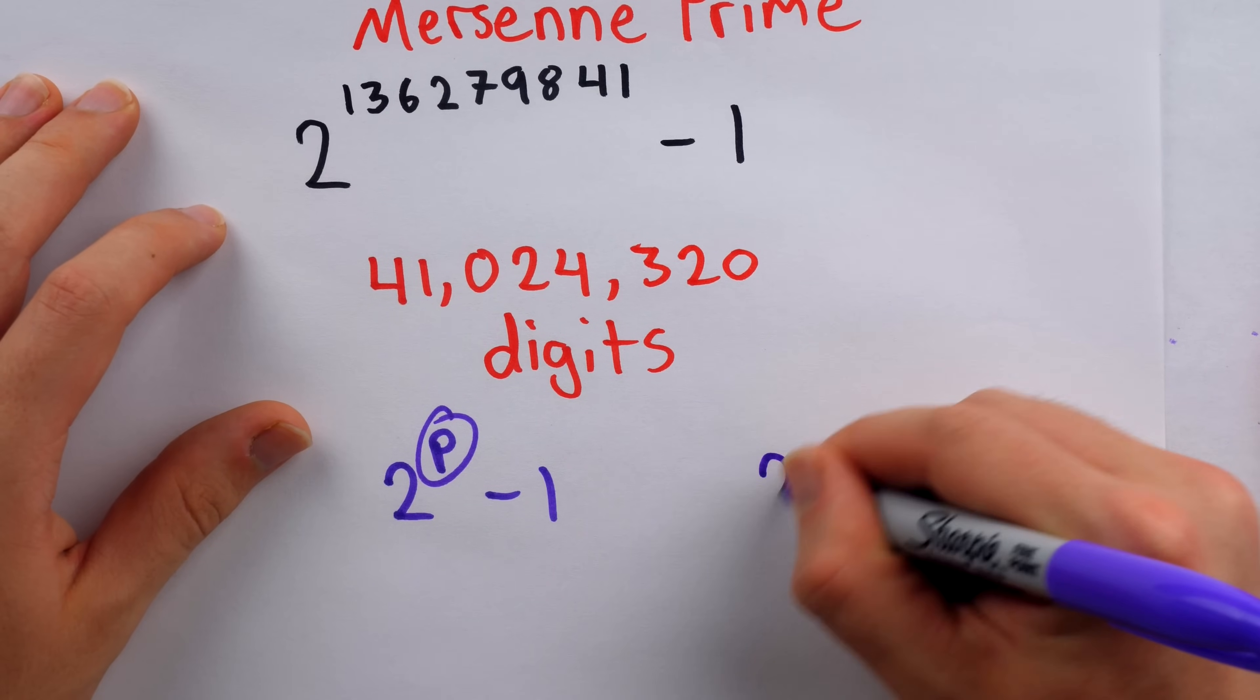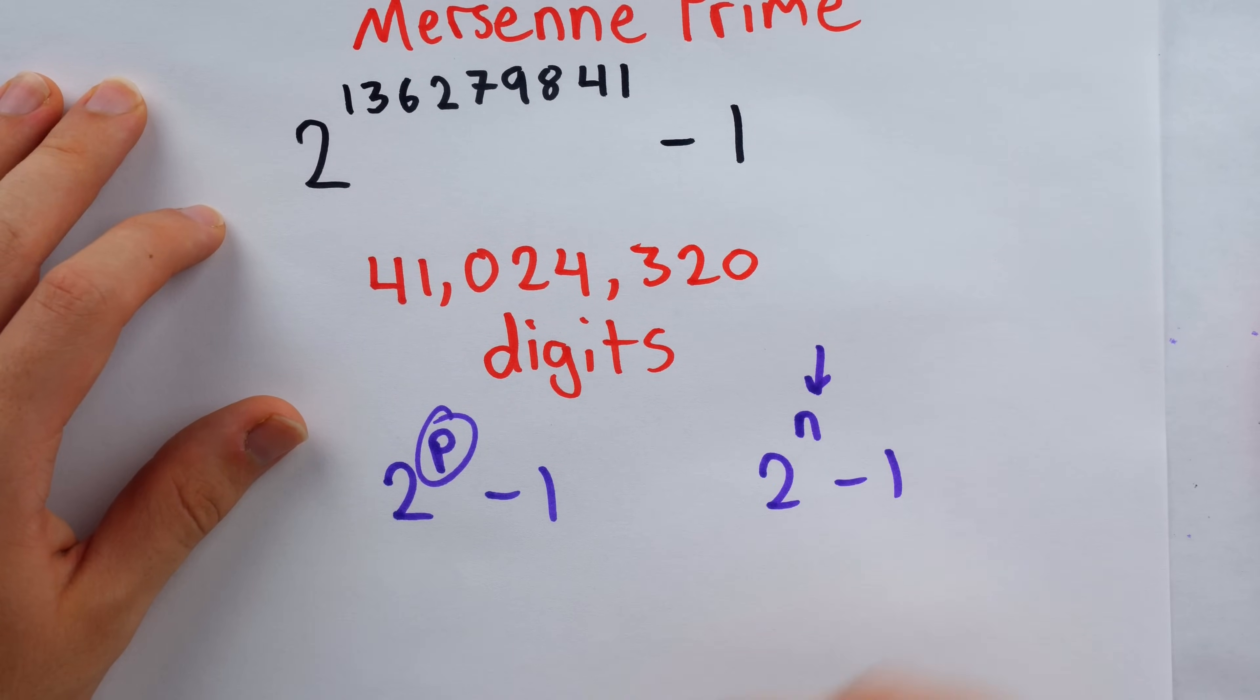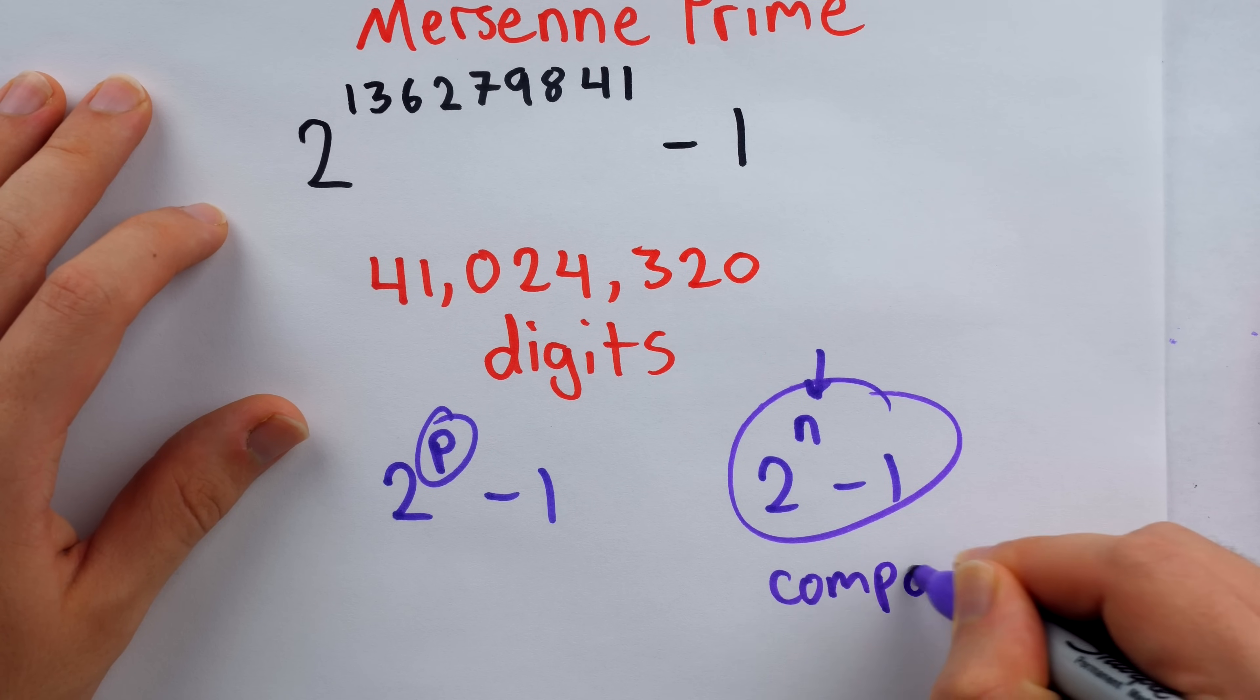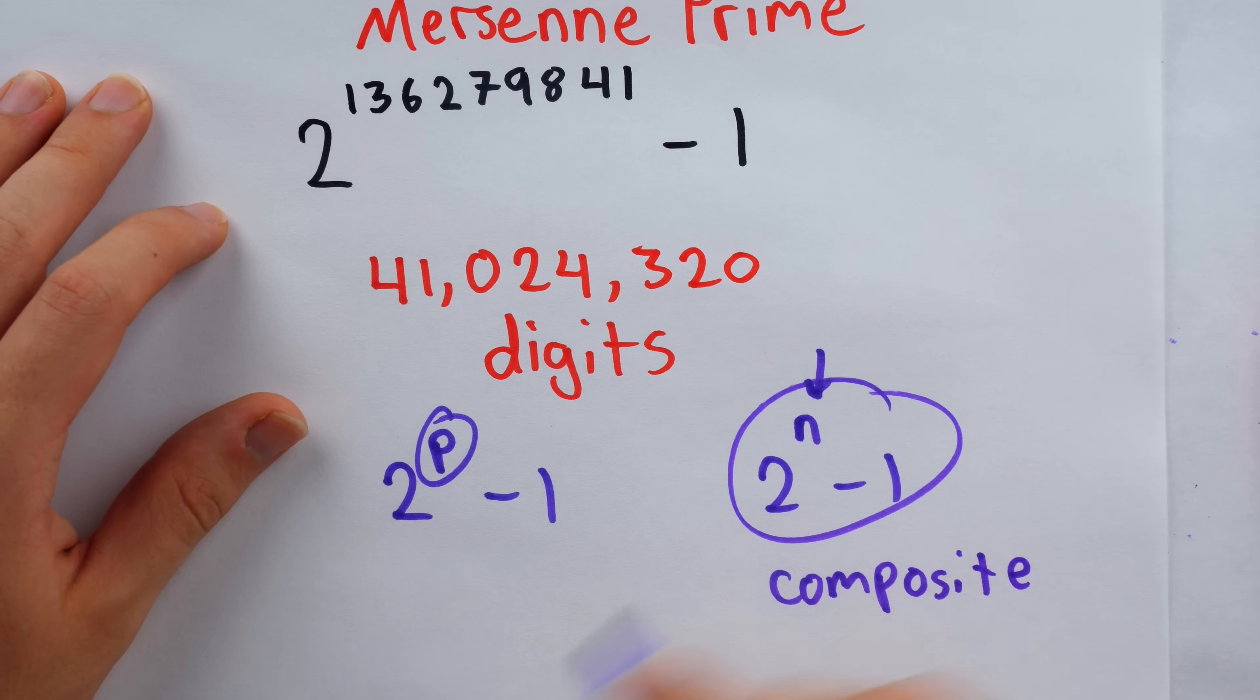Anything like two to the n minus one, where n is composite, any number like this will actually be composite. So that power of two has got to be prime.